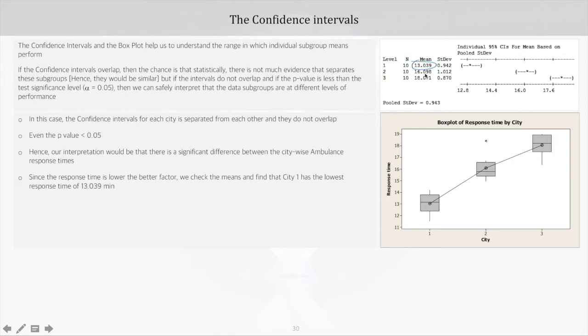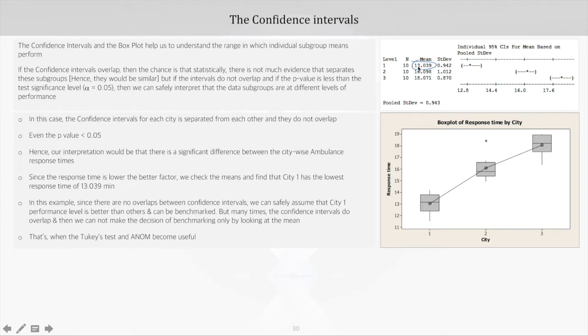We can make out that City 1 has the lowest response time of 13.04 minutes. So here we have seen there are no overlaps between the confidence intervals, and we also saw that the p-value is less than 0.05, so we can safely assume that City 1 performance level is better than other cities.